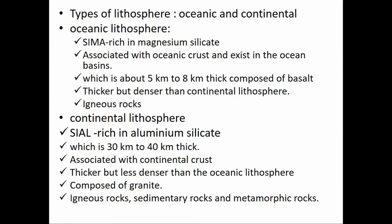The second type is continental lithosphere, also called sial because it consists of aluminum silica. It is about 30 to 40 kilometers thick and associated with the continental crust. It is thicker but less dense than the oceanic lithosphere, composed of granite, and has lower density. Most types of rocks are found in the continental lithosphere: igneous rock, metamorphic rock, and sedimentary rock.